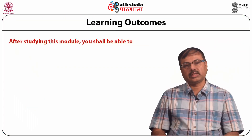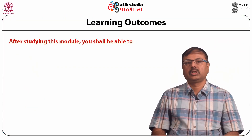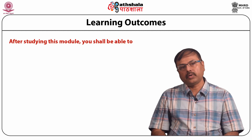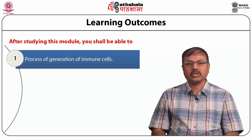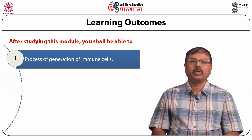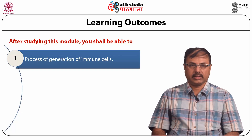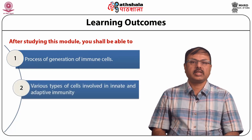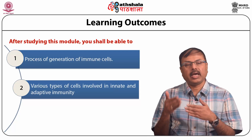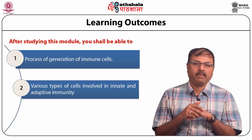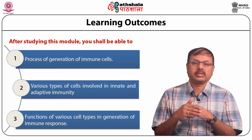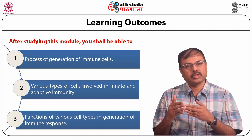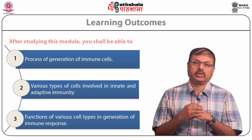The learning objectives of this module are: first, the process of generation of immune cells; second, the various types of cells involved in innate and adaptive immunity; and third, the functions of various cell types in the generation of immune response.